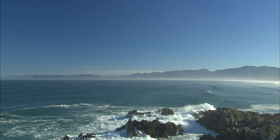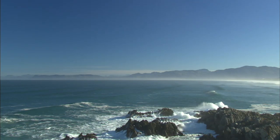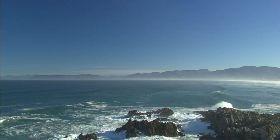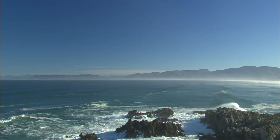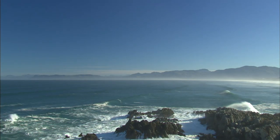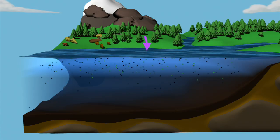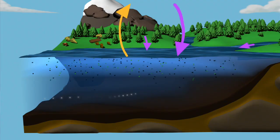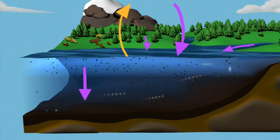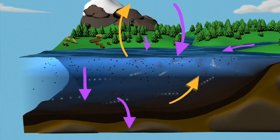Moving offshore, the ocean holds huge amounts of carbon — about 50 times the amount we find in the atmosphere. The ocean is sometimes called a carbon sink, meaning that it absorbs or takes up carbon from the atmosphere. It takes up carbon through physical and biological processes.